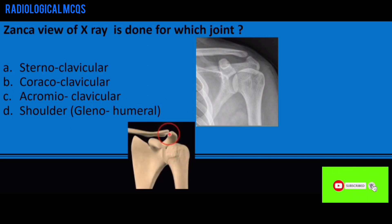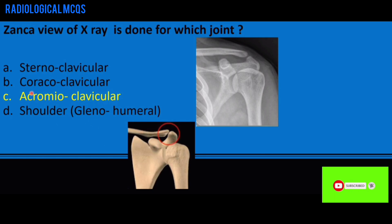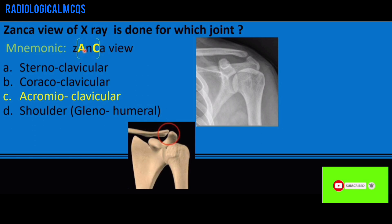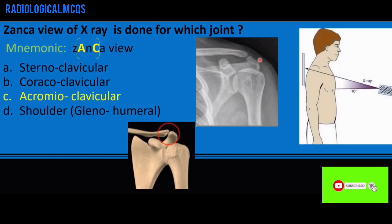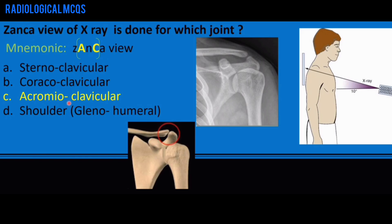The acromion process articulates with the clavicle, and that is the coracoid process. The Zanka view is done for the acromioclavicular joint. The mnemonic is in the name Zanka itself — it is the joint between A and C, that is the acromioclavicular joint. The X-ray beam is angled cephalad at 10 degrees, centered on the acromioclavicular joint, and it is an anteroposterior (AP) view.